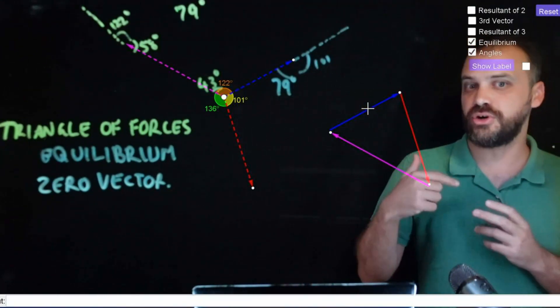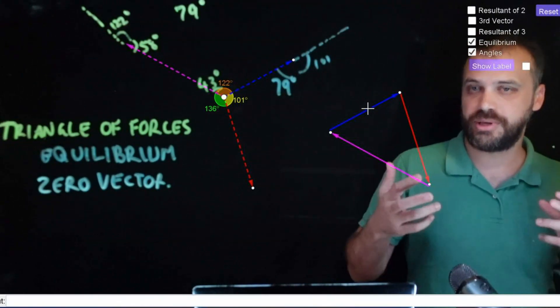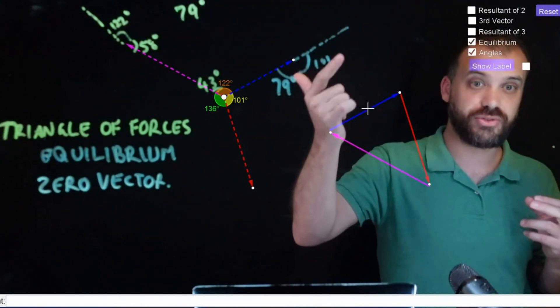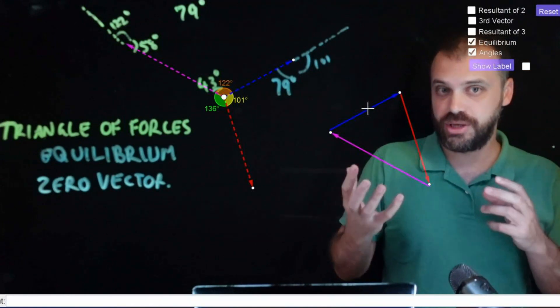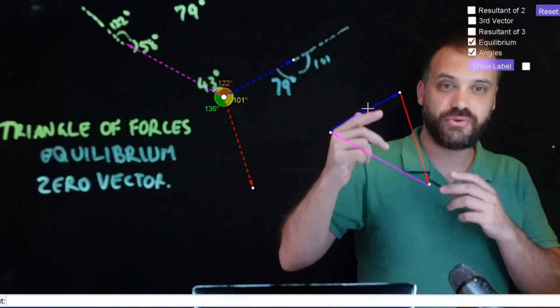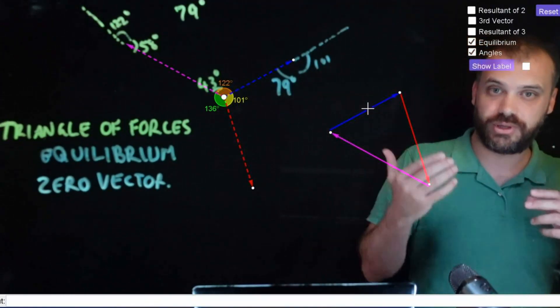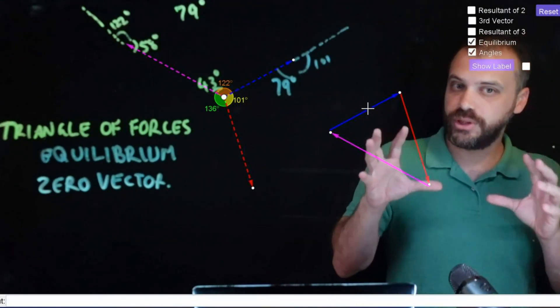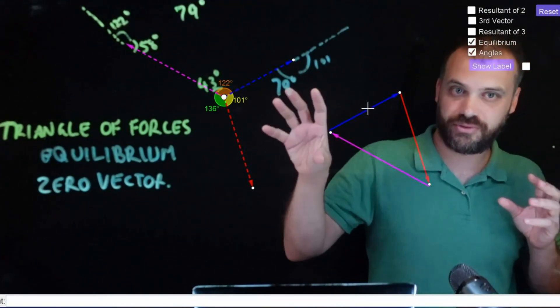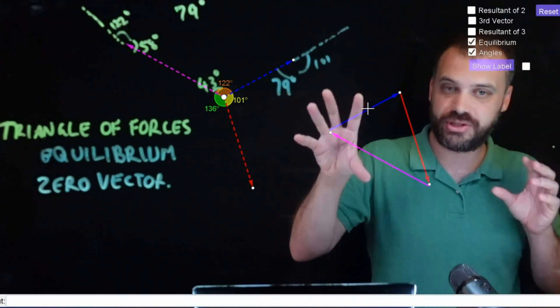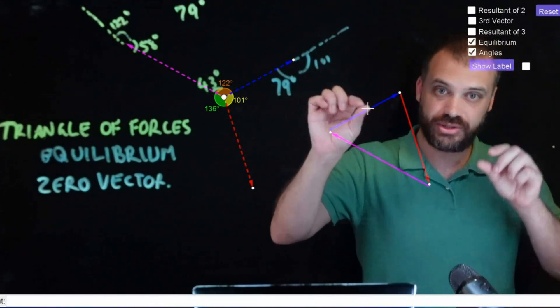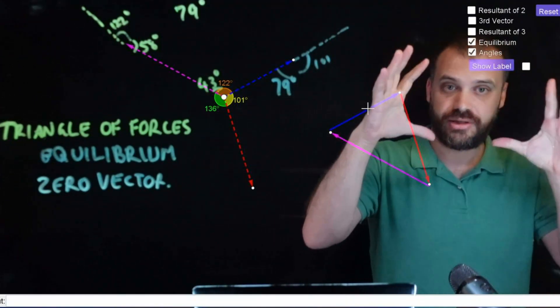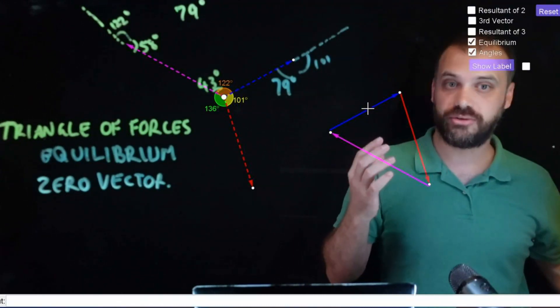And you can label that up and then you can do whatever you need to do with it. It might be that you don't know one of the angles. It might be that you know two of the forces and you want to find the third force. It might be that you know two of the forces and one of the angles and you want to know one of the other forces. So, all we're looking at here is the idea of a triangle of forces and the idea of going through a process of slides to create our triangle of forces.